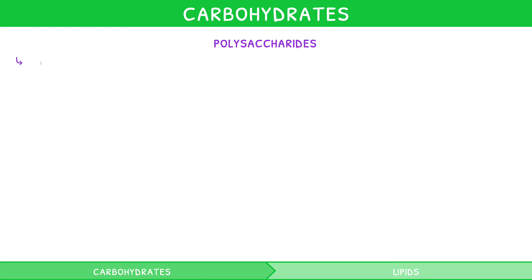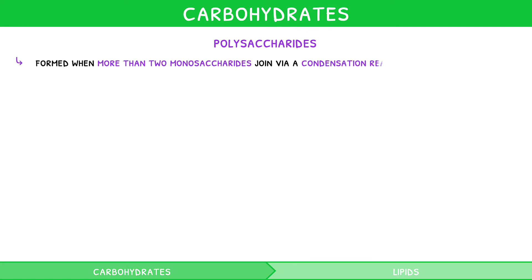Polysaccharides are formed when more than two monosaccharides join via a condensation reaction. Like disaccharides, this produces water and is an anabolic reaction. In the IB syllabus, there are three main polysaccharides that you need to describe and draw the structure of. These are starch, glycogen and cellulose.